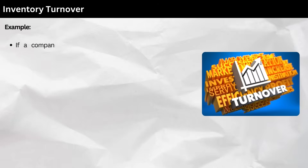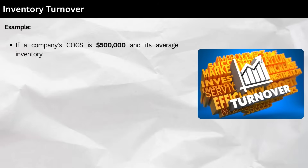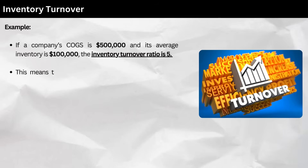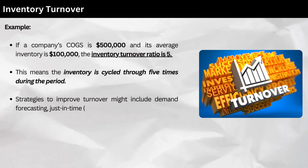Example: if a company's COGS is $500,000 and its average inventory is $100,000, the inventory turnover ratio is 5. This means the inventory is cycled through 5 times during the period. Strategies to improve turnover might include demand forecasting, just-in-time (JIT) inventory practices, or better supplier collaboration.